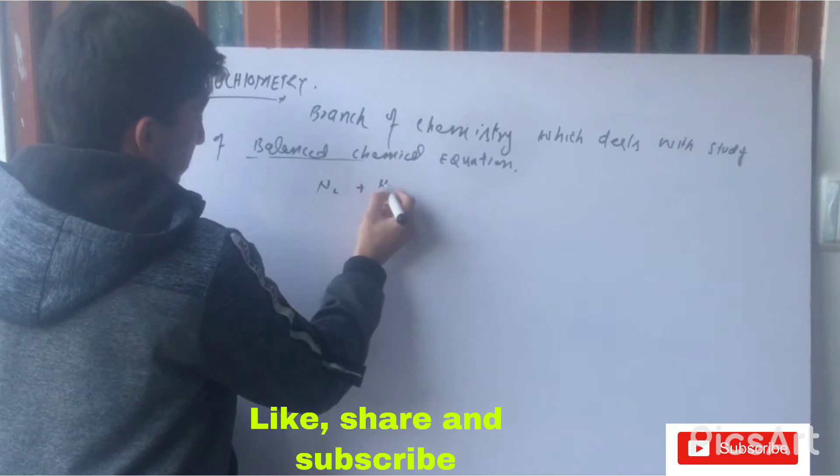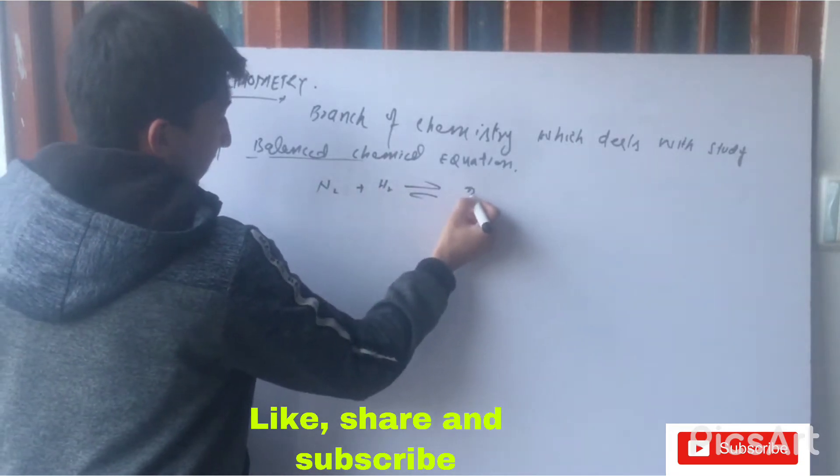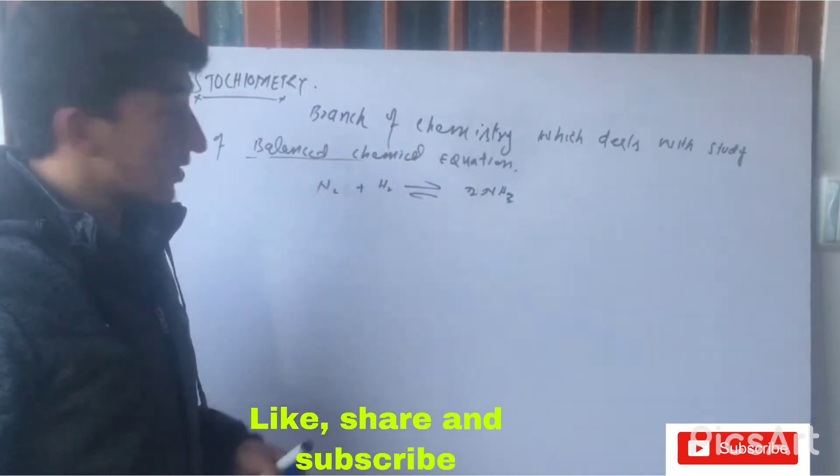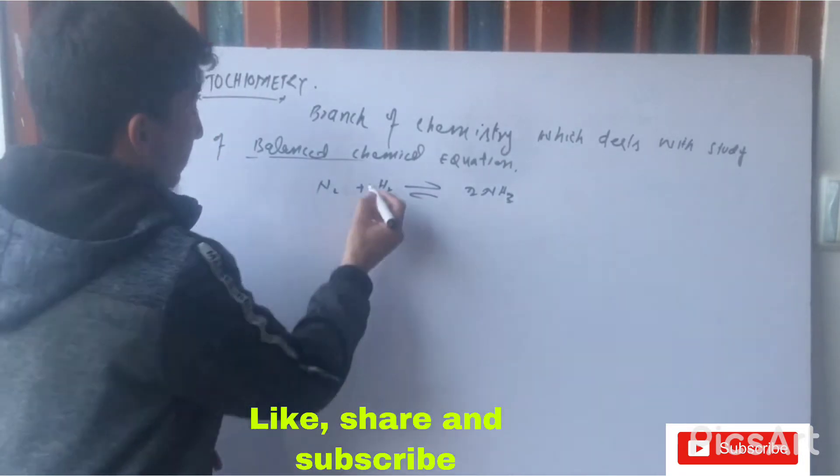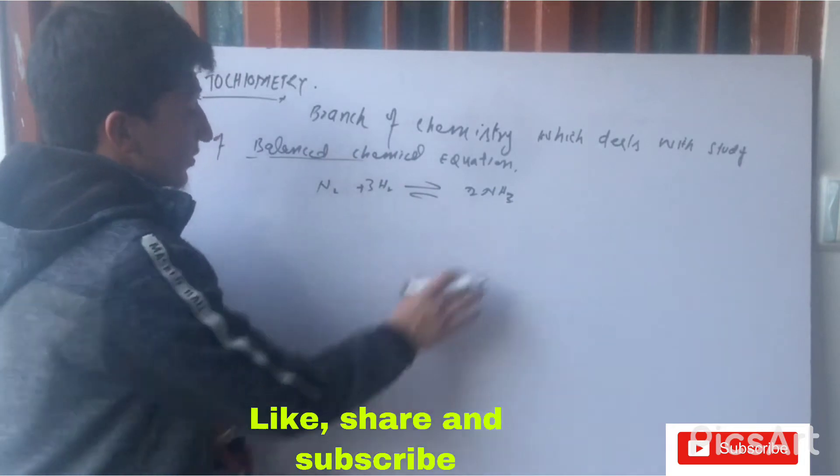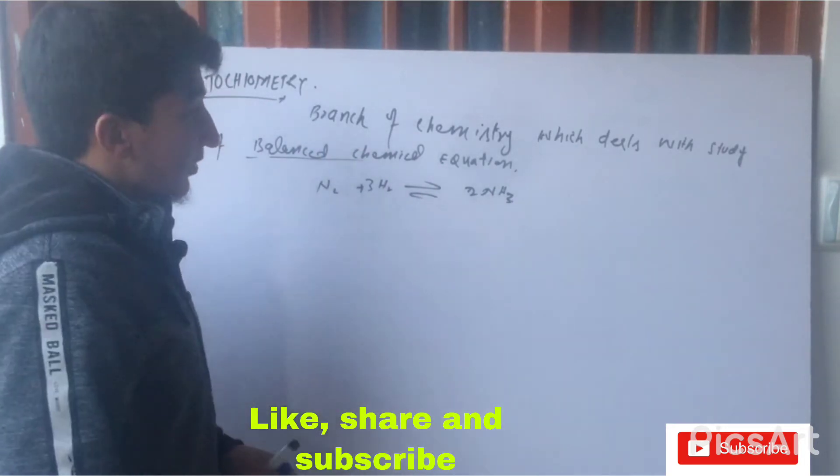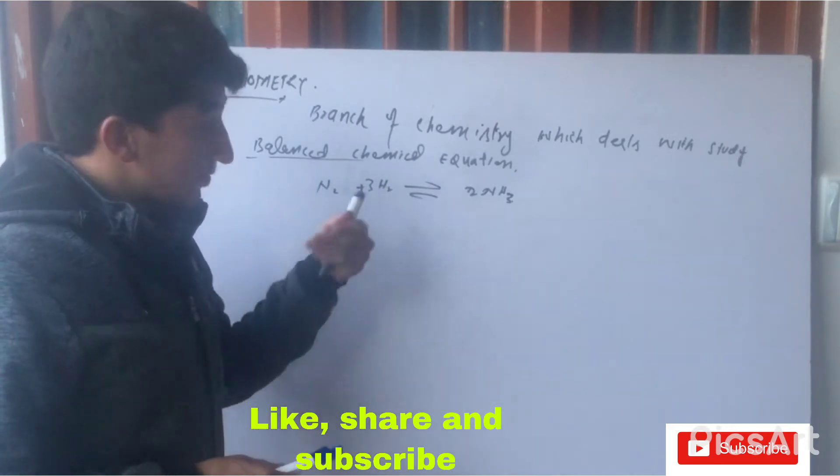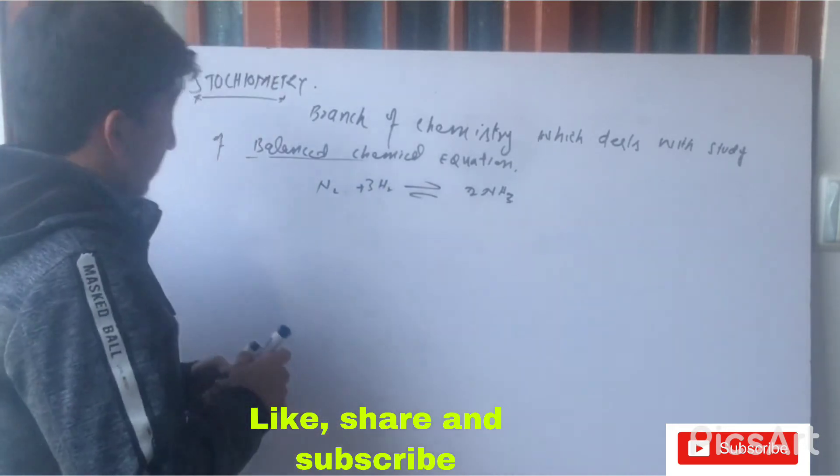We have the example N2 plus H2 which gives ammonia, that is 2NH3. In this case, this reaction is not balanced, so this is not a stoichiometric equation. We would put this 3, so this is now the stoichiometric equation. Now the topic we are going to discuss here is conversions.